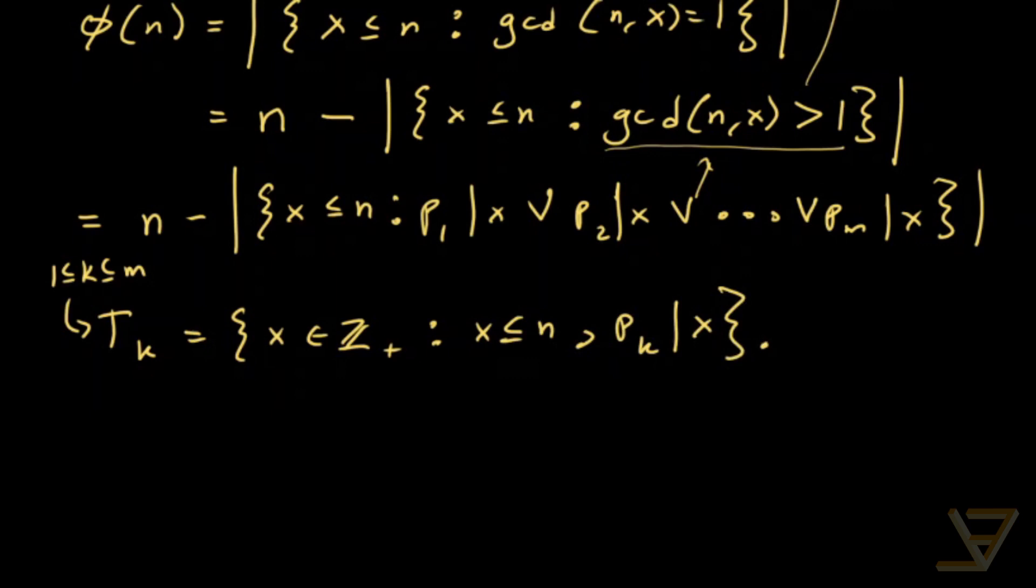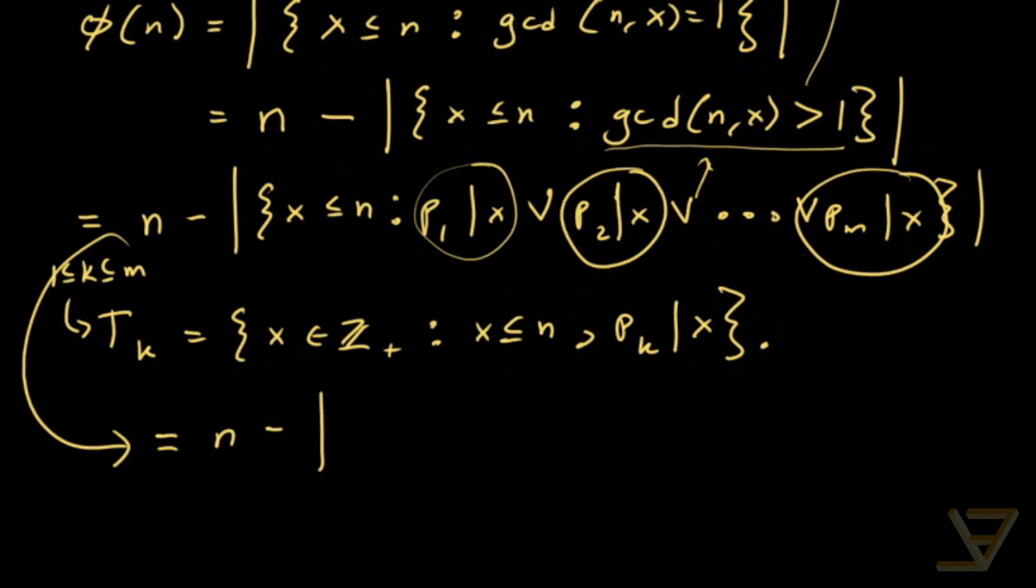So essentially T1 is a set of these, T2 is a set of these, all the way through to Tm is a set of these. So this allows us to write the set as n minus the cardinality of the union of T1 union T2 union all the way through to Tm.